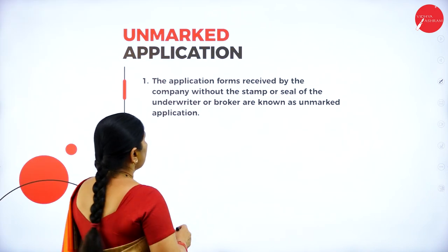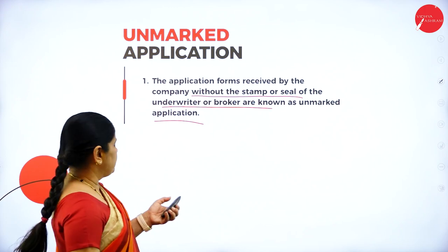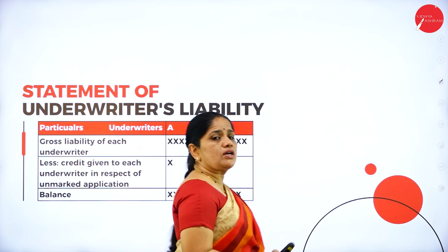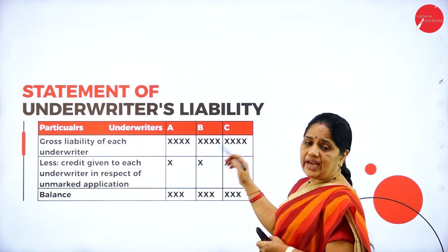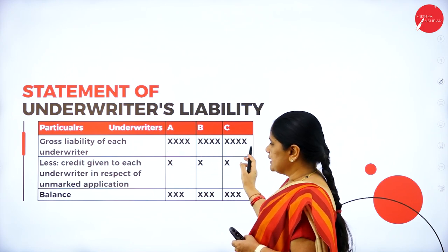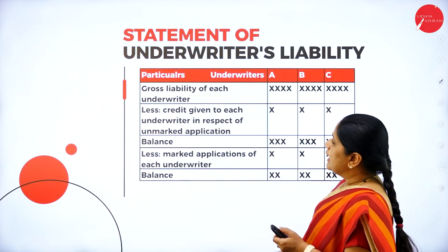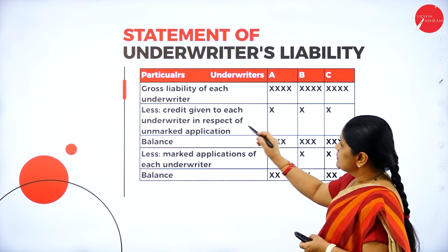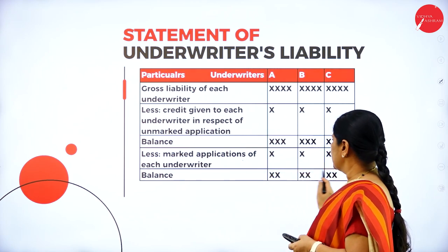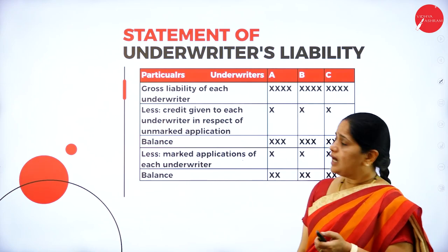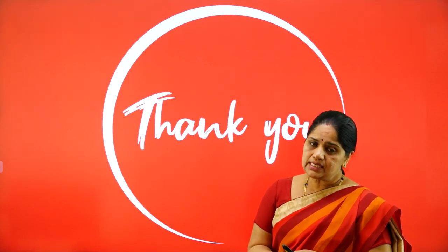Application forms received by the company without the stamp or seal of the underwriter are known as unmarked applications. For the calculation of the statement of underwriter's liability, if there are more than three underwriters, we write the gross liability in the ratio, then deduct the unmarked applications to get the balance, and then deduct the marked applications — the remaining balance becomes the net liability of the underwriters. With this we come to the end of this session on underwriting of shares. Thank you.